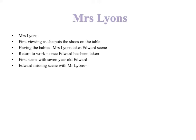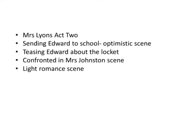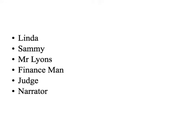Mrs. Lyons follows exactly the same dates as Mrs. Johnson. We first see Mrs. Lyons around 1959-1960, taking her through to the end of Act 1 at about 1967. Then we start Act 2 with her at about 1974, before she features in the light romance storyline, taking us to about 1983.